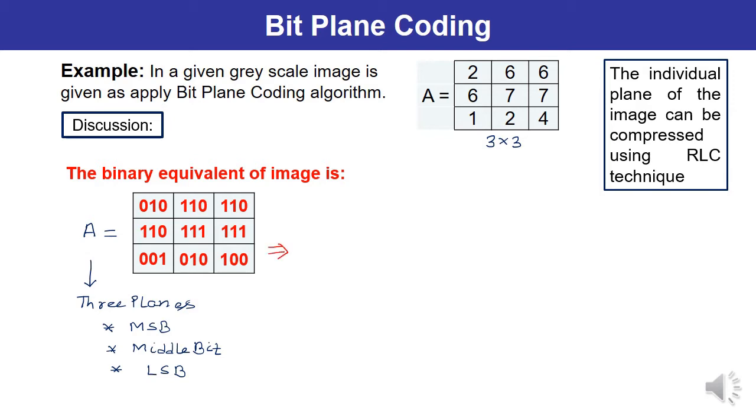Now let us write what would be A when considering the MSB of all. In this particular case it would be: 0 1 1, 1 1 1, 0 0 1. This is how you can write down this bit plane. Second, you can write down for the middle bit, which will be: 1 1 1, 1 1 1, 0 1 0.